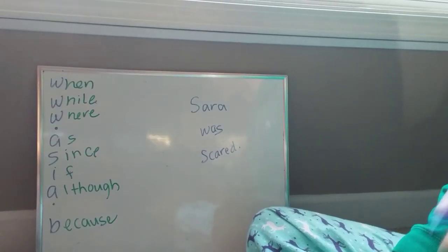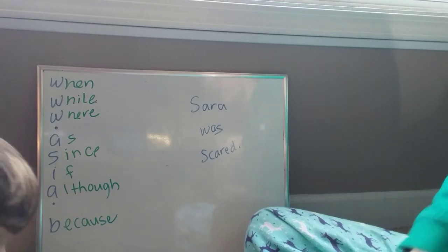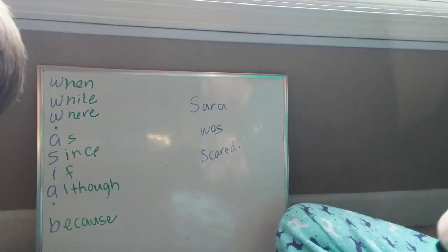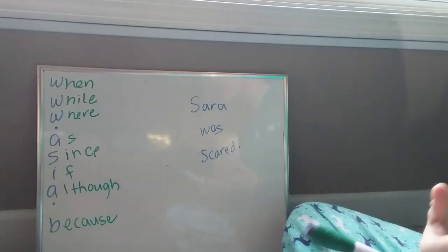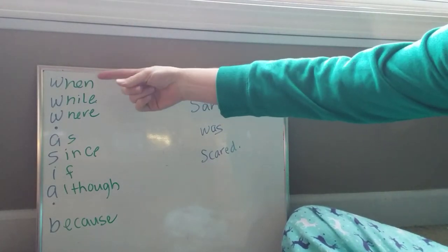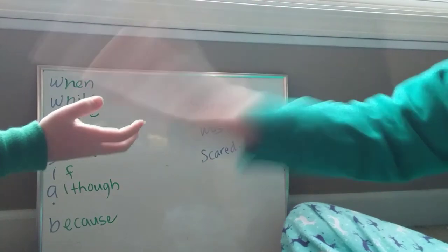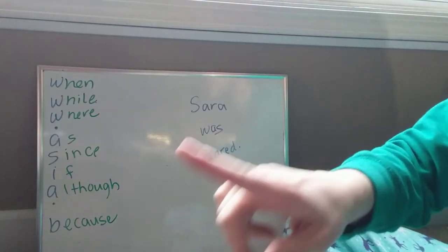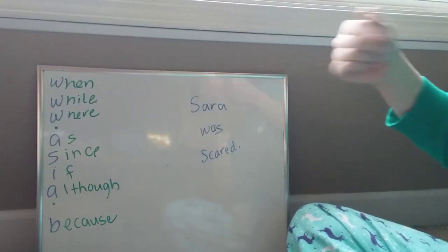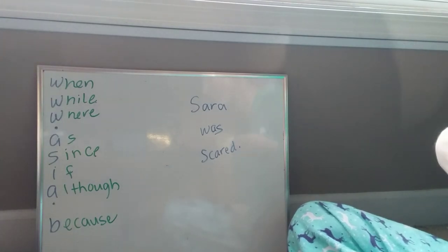For IEW this week, we introduced the number five clausal opener. Remember how we did clauses for complex sentences? The clause is going to have the www.asia.b words — that's when, while, where, as, since, if, although, and because.